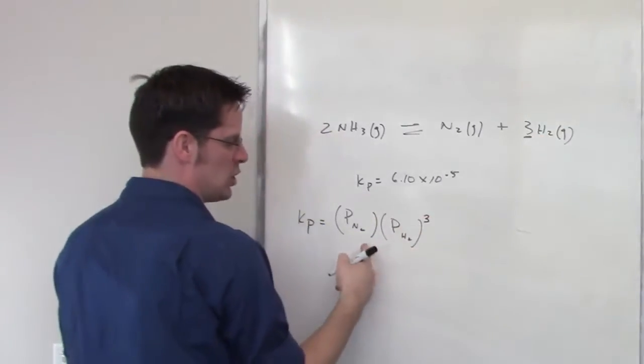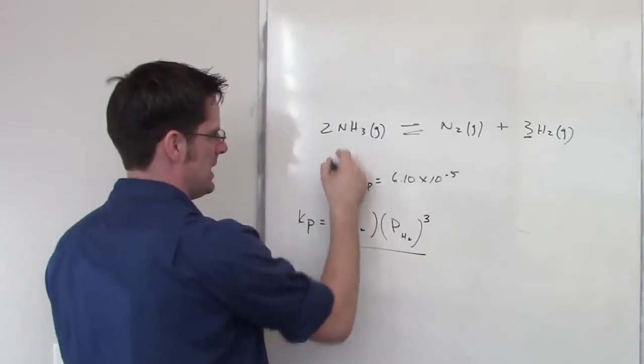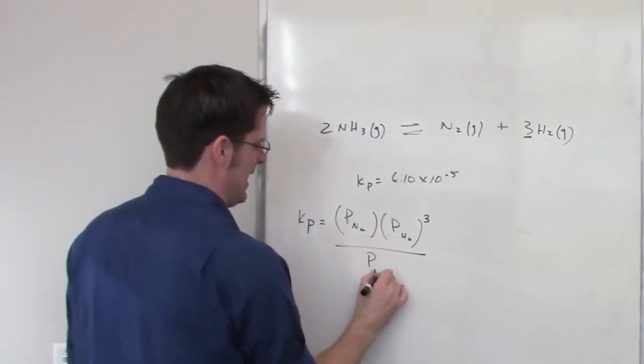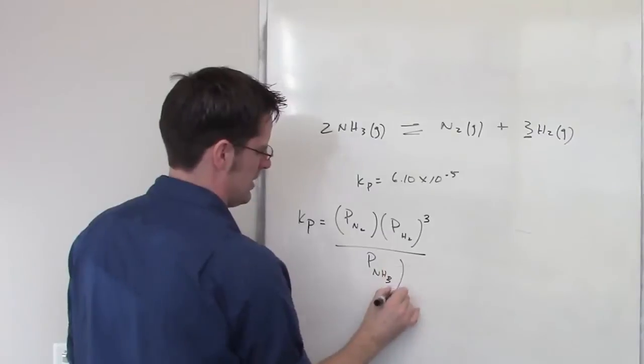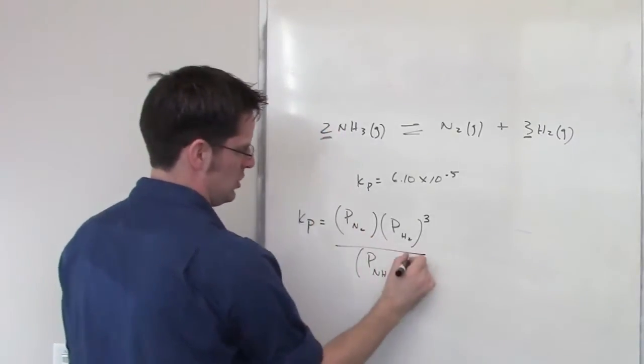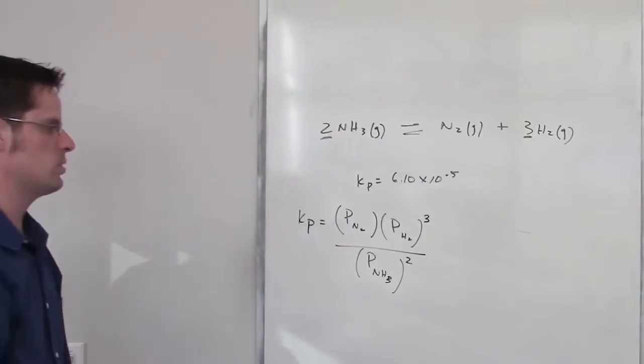That 3 becomes an exponent, cubed, divided by the individual pressure of NH3, squared. That 2 becomes an exponent there as well.